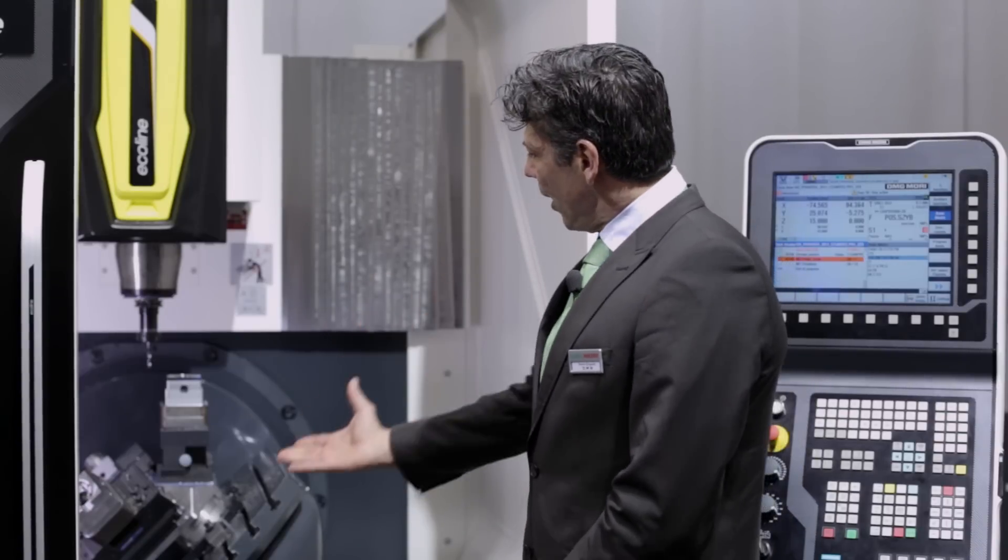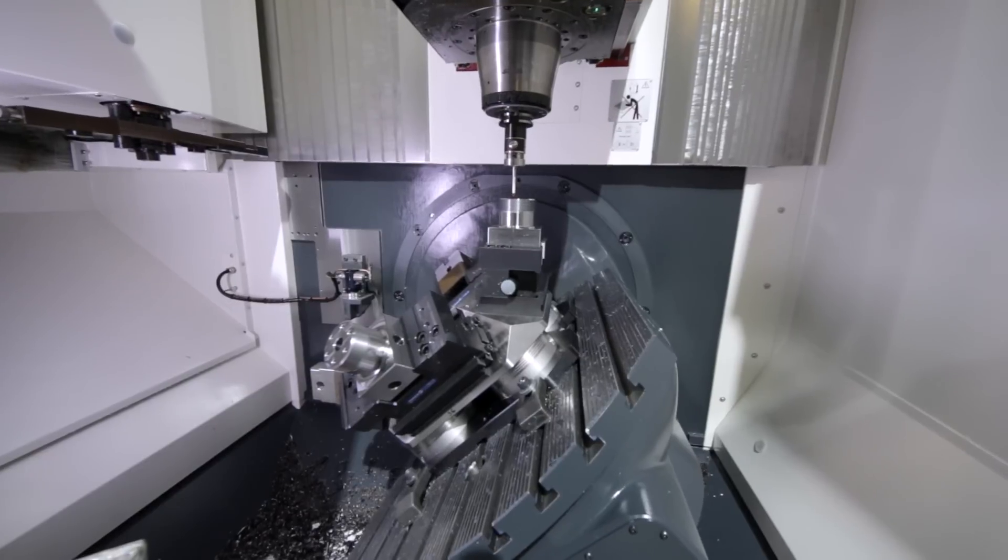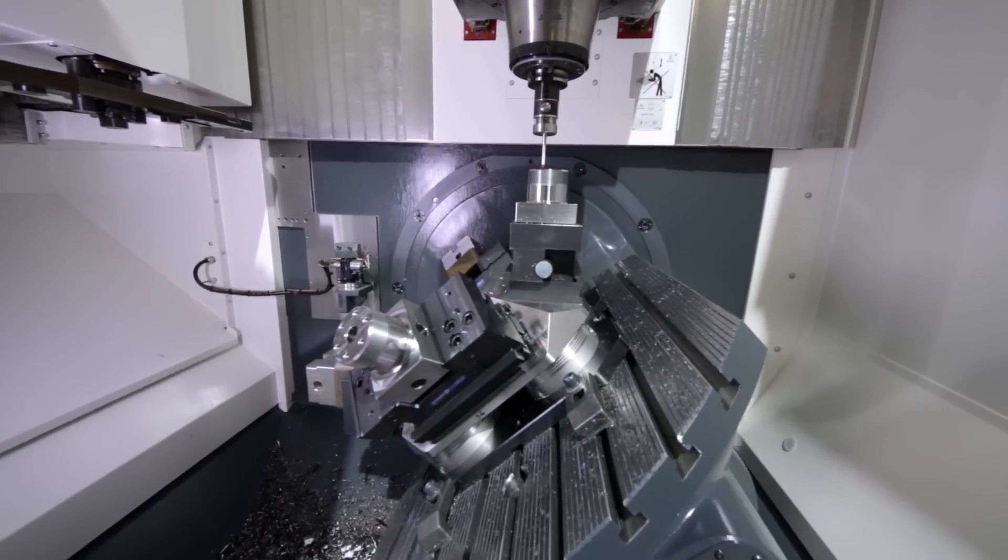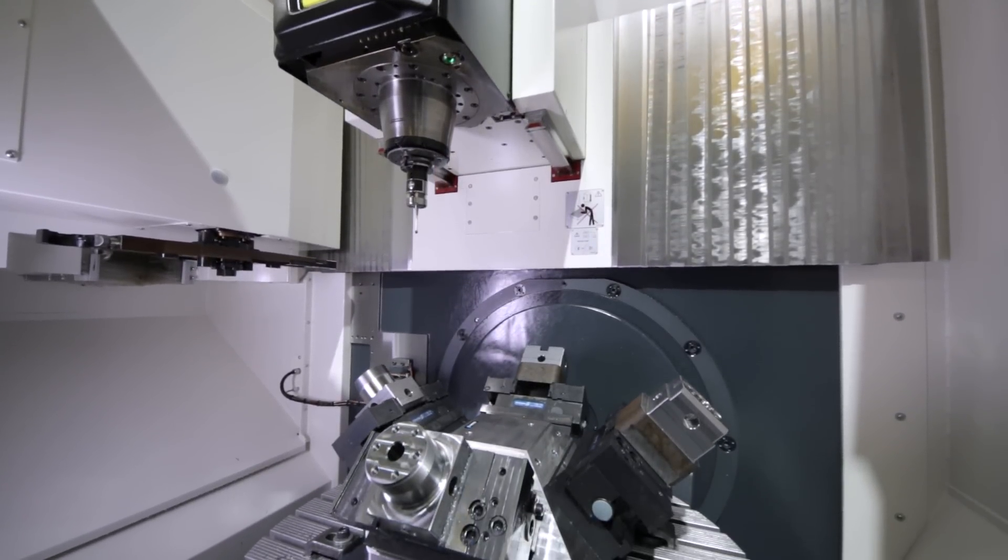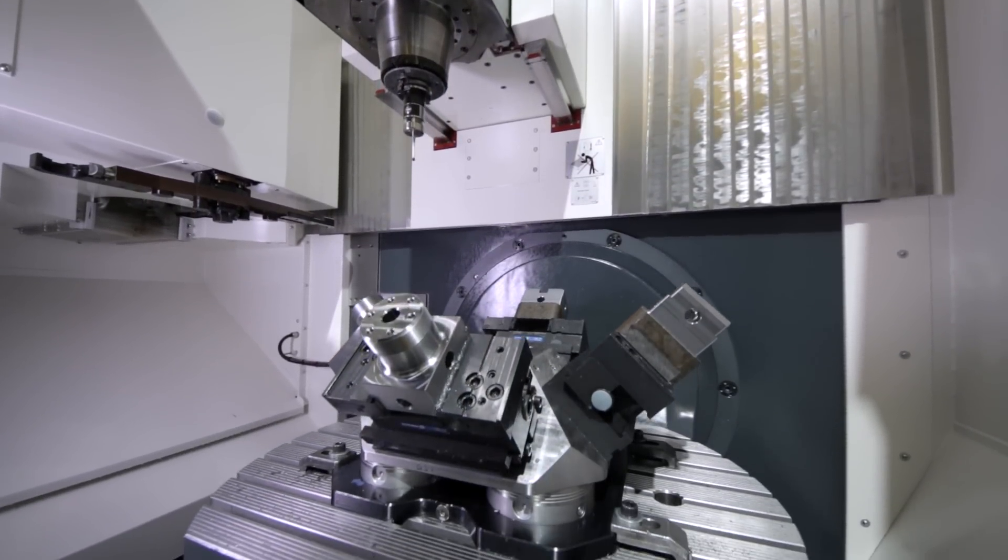As you can see here, a rotary tilting table which we have in standard. We have a 12,000 rpm inline spindle in standard and we have a big tool magazine with 32 tools also in standard.